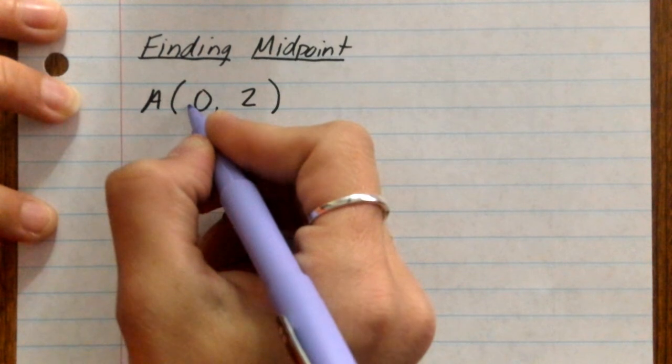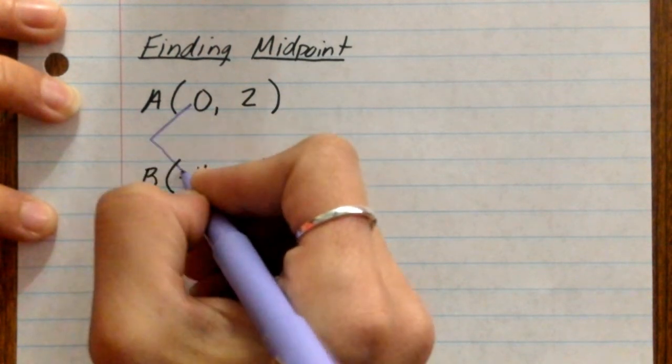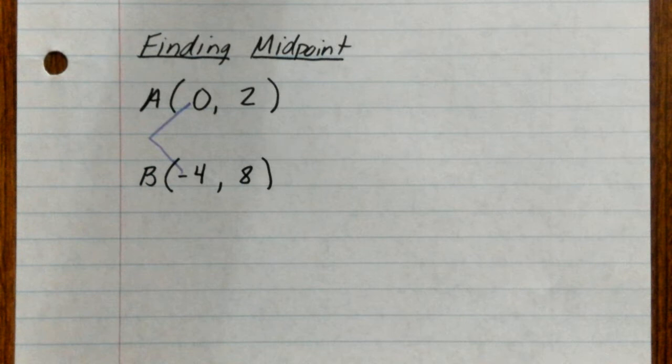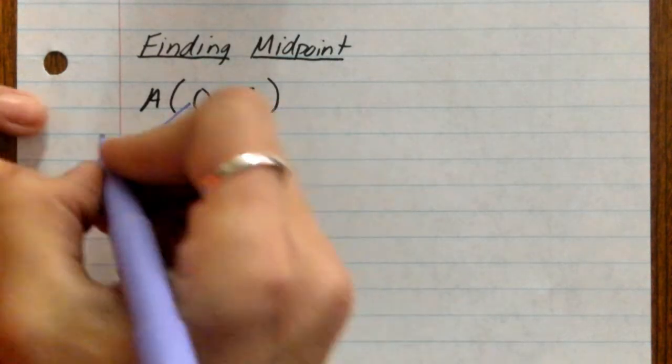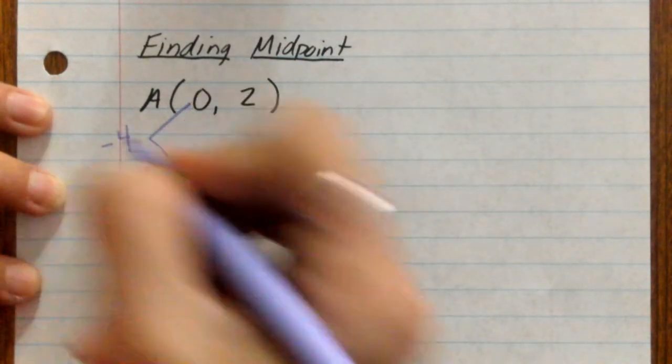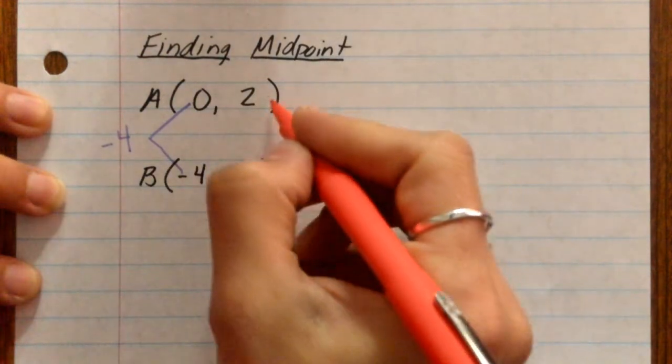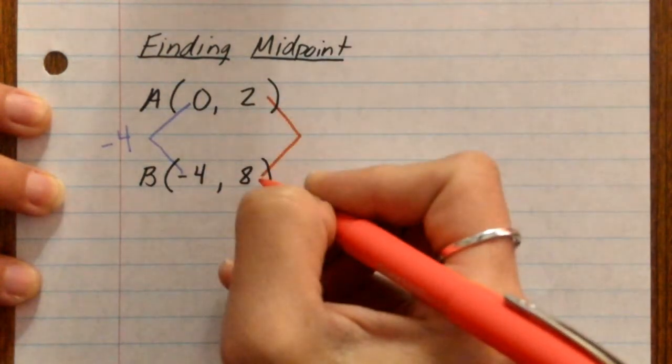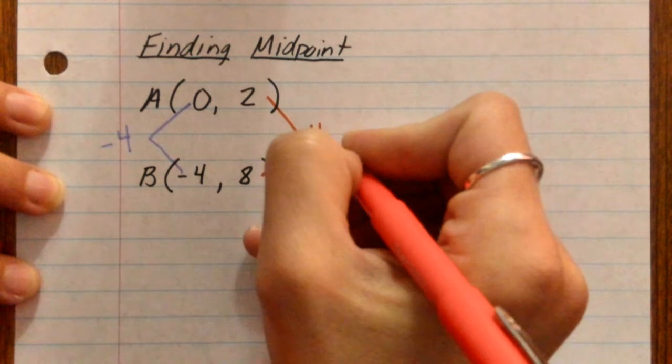We have to decide when we go from 0 to negative 4, what are we doing? Well, to get from 0 to negative 4, look at a number line, we are going to be subtracting 4. Then we come over here to our y's. How do we get from a 2 to an 8? We have to add 6.